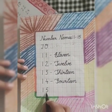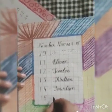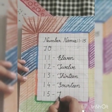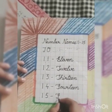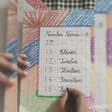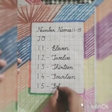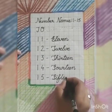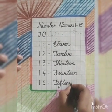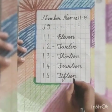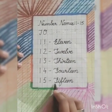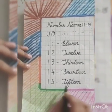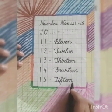Next number is 15. Again, first of all, we will write capital cursive letter F. F-I-F-T. Now we will write teen with it. T-E-E-N. 15. F-I-F-T. T-E-E-N. 15. F-I-F-T. T-E-E-N. 15.